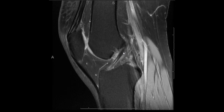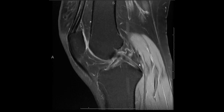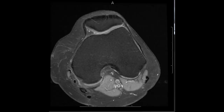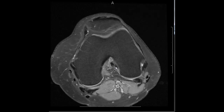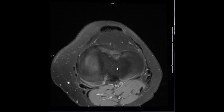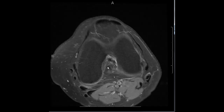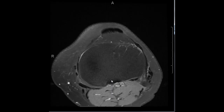The anterior cruciate ligament is seen here. It has a relatively taut course and it parallels Blumensaat's line, which is the roof of the femoral notch. The PCL is also seen on the sagittal image. On the axial sequence, the ACL is seen going from bone on the lateral femoral condyle, extending caudally into anteromedial and posterolateral bands to insert on the tibia. The posterior cruciate ligament is somewhat less well seen on axial images, but is seen here on the medial femoral condyle extending caudally.